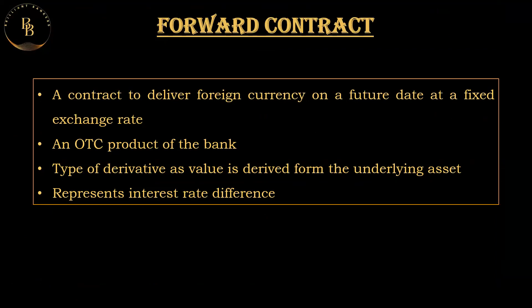For forward contracts, imagine you're a farmer growing rice. You agree with a rice seller to sell 100 packs of rice for rupees 2,000 each in three months. This agreement is called a forward contract — a contract with a seller to be fulfilled at a future date. It helps you secure a price now even if the price changes later.